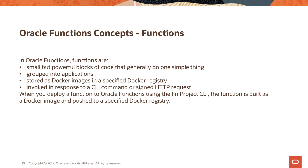The function definition needs to include the Docker image in a specified Docker registry, which is pulled when the function is invoked. This Docker registry can be anywhere, or you can leverage the OCI Registry service within OCI. You also need to specify the maximum length of time the function is allowed to execute and the maximum amount of memory the function is allowed to consume.